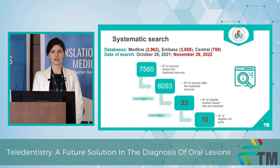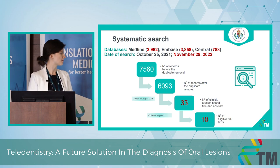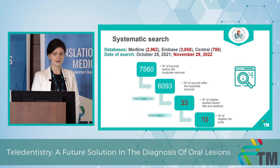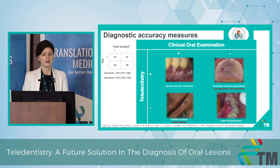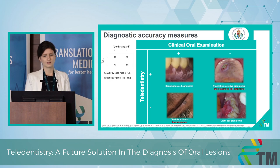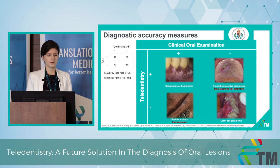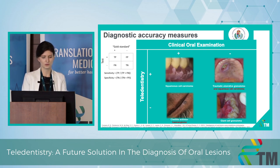I made my systematic search and we searched in November. We found one more eligible article, so we ended up with ten articles in the meta-analysis. As I am conducting a diagnostic meta-analysis, we needed diagnostic accuracy measures, meaning there is a gold standard — which is clinical oral examination in my case — and an index test, which is teledentistry tools, which is image-based in my meta-analysis.